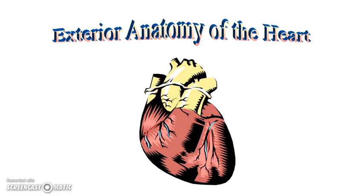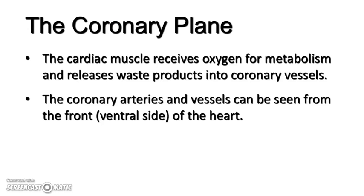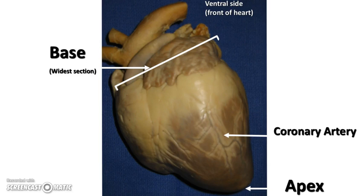This brings us to the exterior anatomy of the heart — the coronary plane. The cardiac muscle receives oxygen for metabolism and releases waste products into vessels. The front of the heart, the coronary plane, is where the coronary arteries and vessels can be seen from the front or ventral side. The base is the top of the heart and its widest section, with the coronary arteries visible there. The very tip, where it's pointed, is called the apex. During dissection, the apex will be aligned so you can see the coronary arteries on the ventral or anterior view.